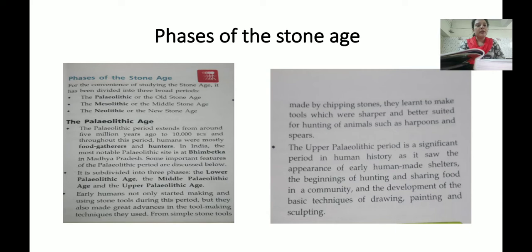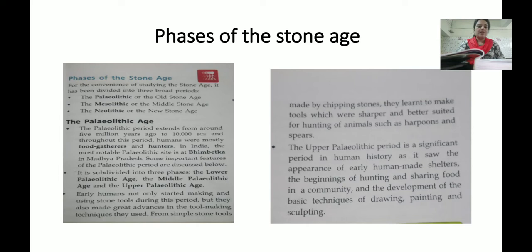Some important features of the Paleolithic period are discussed below. It is subdivided into three phases: the Lower Paleolithic, the Middle Paleolithic, and the Upper Paleolithic. Early humans not only started making and using stone tools during this period, but they also made great advances in tool-making techniques and use.